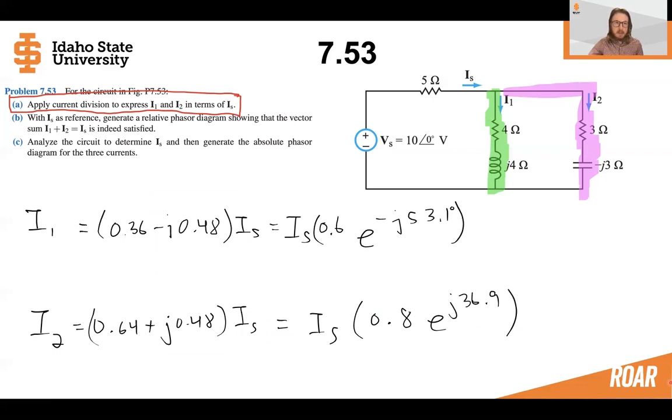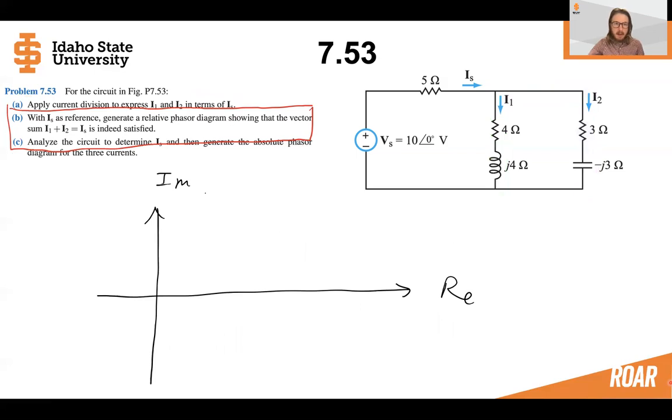Now we've completed part A, where we have represented I1 and I2 in terms of IS. So with that done, let's use IS as a reference because we don't know what its phase or angle is, and let's generate a relative phasor diagram showing the sum is indeed satisfied.